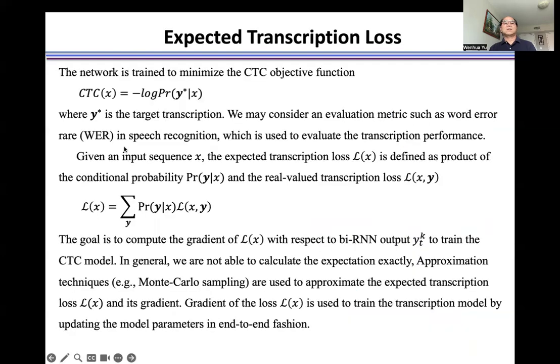The network is trained to minimize the CTC objective function, here defined as negative log PR, where Y star is a target transcription. We may consider evaluation metrics such as word error rate in speech recognition, which is used to evaluate the transcription performance.